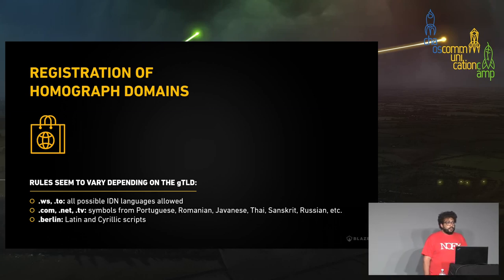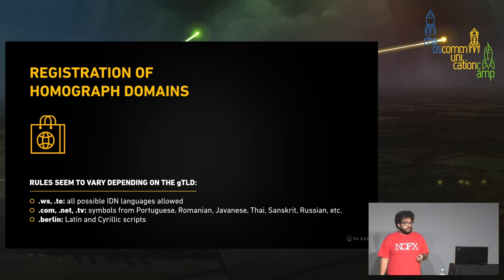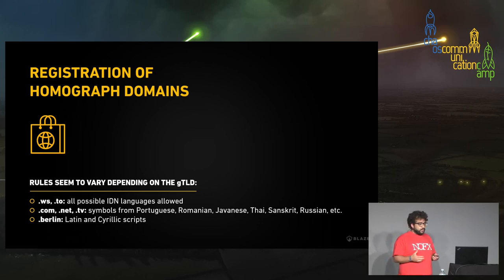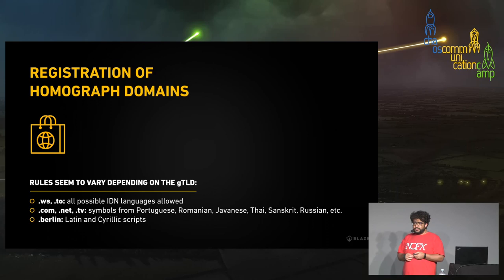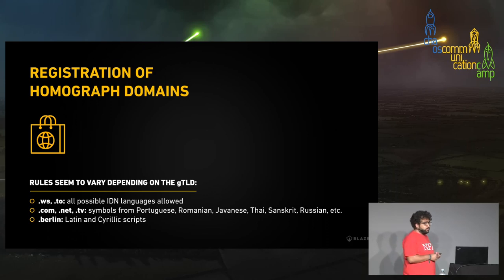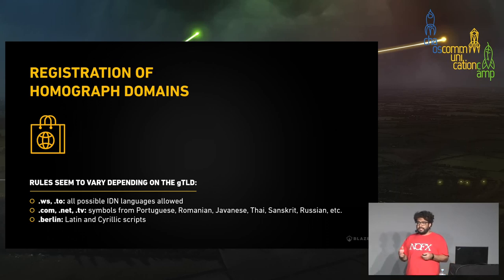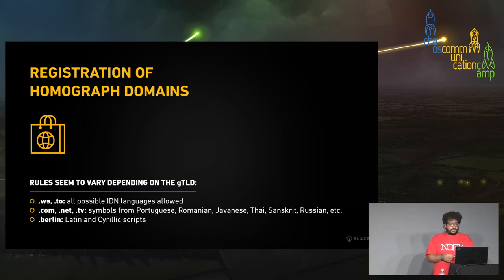ICANN had a resolution around 20 years ago when they introduced internationalized domain names, but they later realized there were flaws in how they were allowing people to register domains. They discovered the confusable homograph problem — meaning people could register google.com with a Cyrillic 'E' that looks like the Latin 'E' — making it very difficult to slow down these attacks.